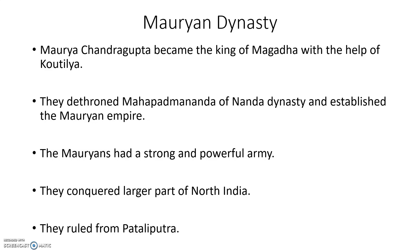Before Chandragupta Maurya, Mahapadmananda — who belonged to the Nanda Dynasty — was the king of Magadha. The Mauryans had a strong and powerful army, and the success of a king depends on his army. They conquered a larger part of North India and ruled from their capital, Pataliputra.